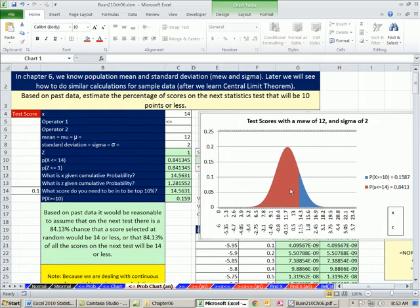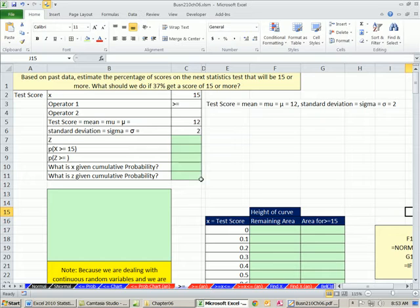In this video, we're going to concentrate on the upper end instead of the lower end. We're using the same example: Based on past data, estimate the percentage of scores on the next statistics test that will be 15 or more. What should we do if 37% on the current test get a score of 15 or more? We'll calculate probabilities, create our chart, and compare that to this.